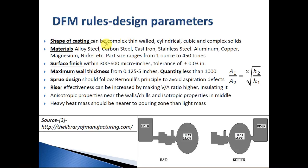Considering DFM rules, the shape of a casting can vary from complex thin-walled features to cylindrical, cubic, and complex solids like engine blocks. Materials vary across different metals like steels, aluminium, and copper, but polymers cannot be used in this process. The part size ranges from about 1 ounce (28.3 grams) to 50 tons. The surface finish is poor, within 300 to 600 micro inches, and often machining and polishing processes are required after casting.